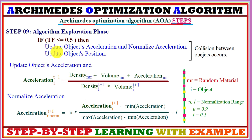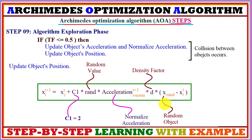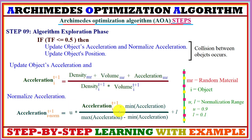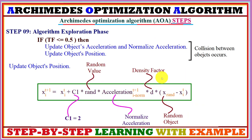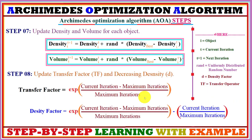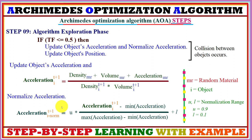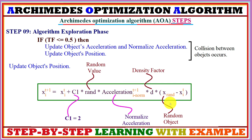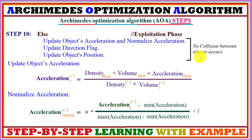After computing normalized acceleration, we update the object's position using the equation: new_position = c1 × rand × object_position + density_factor × randomly_selected_object_position, where c1 is a constant equal to 2, rand is a random value, and the normalized acceleration calculated earlier is also incorporated. The density factor computed in step 8 is used here, along with the randomly selected object's position.